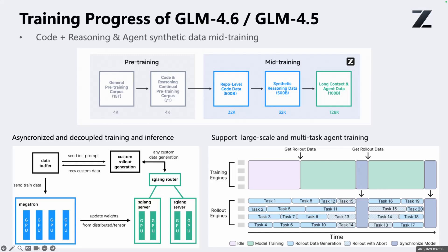The next step is long-context and agent data. Finally, we use about 100 billion tokens of long-context and agent data. The sequence length is now pushed further to 128,000 tokens, and for GLM 4.6 it is 200,000. So the model can handle full documents, whole codebases, and very long conversations. At the same time, we feed a lot of agent trajectories including multi-step tool calls, search, and code execution. This stage improves the model's long-context capability and agent capability.